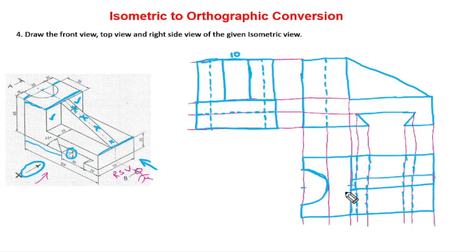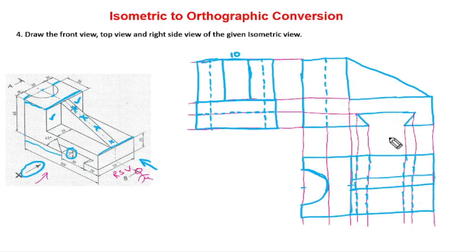For this problem, we have just shown the solution. For dimensioning, what you are supposed to do is distribute all the total dimensions equally across the front view, top view, and side view — one dimension in the front view, one dimension in the top view — and so on. Important point: each dimension should appear in only one view.